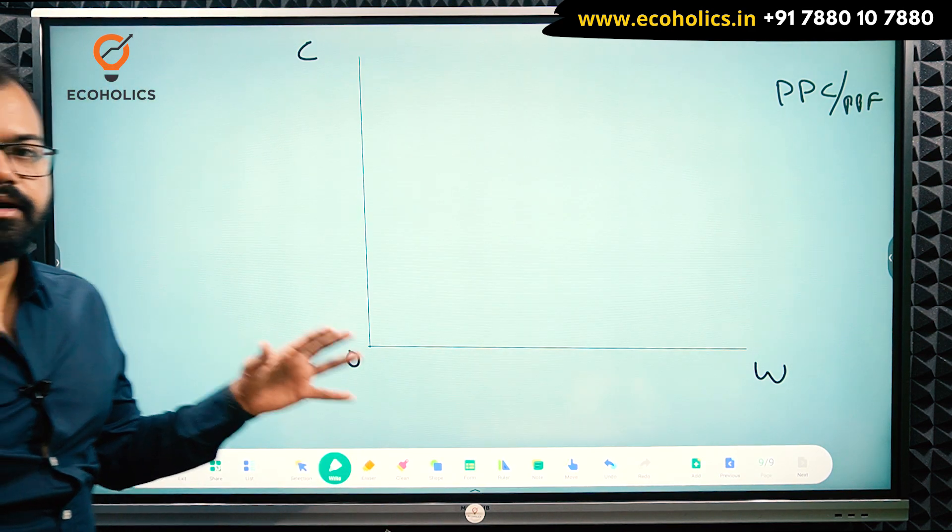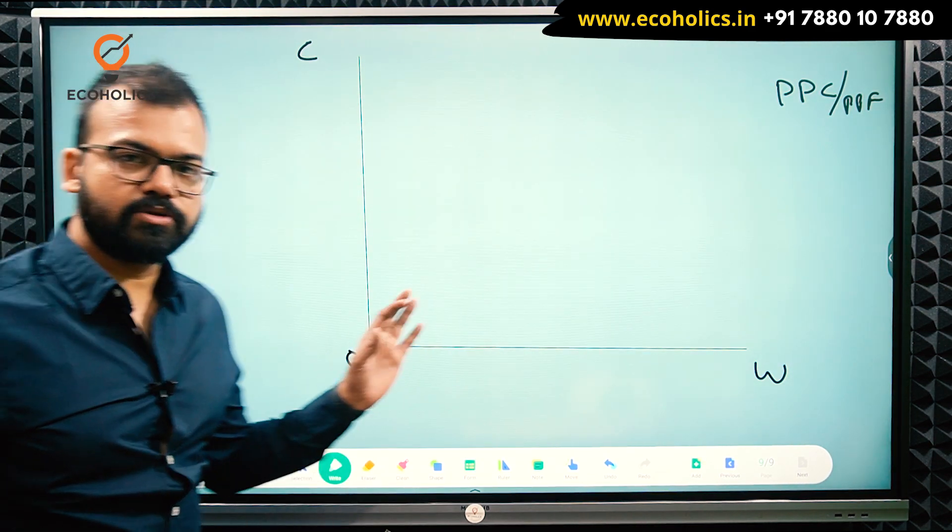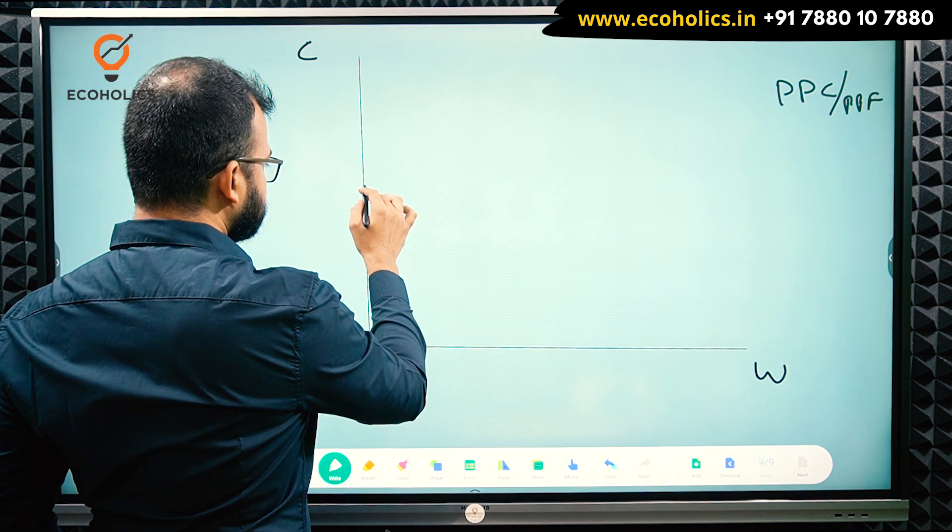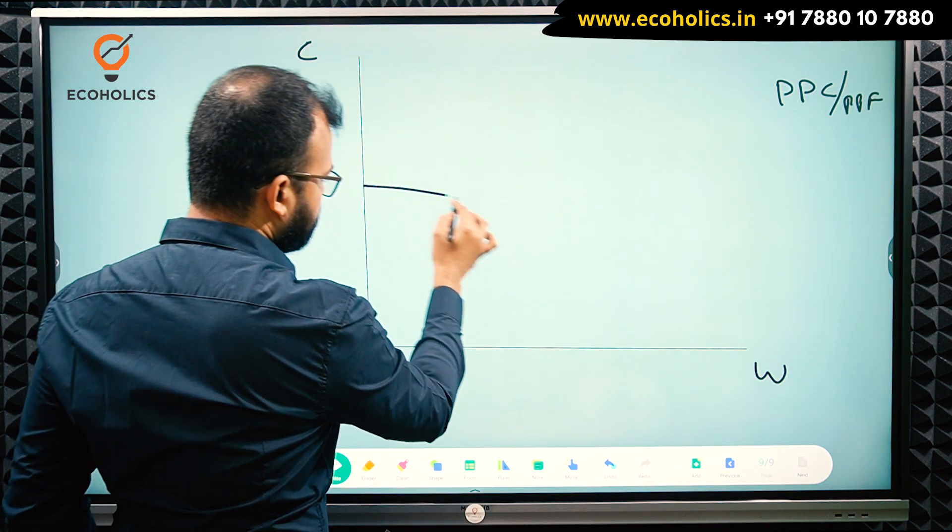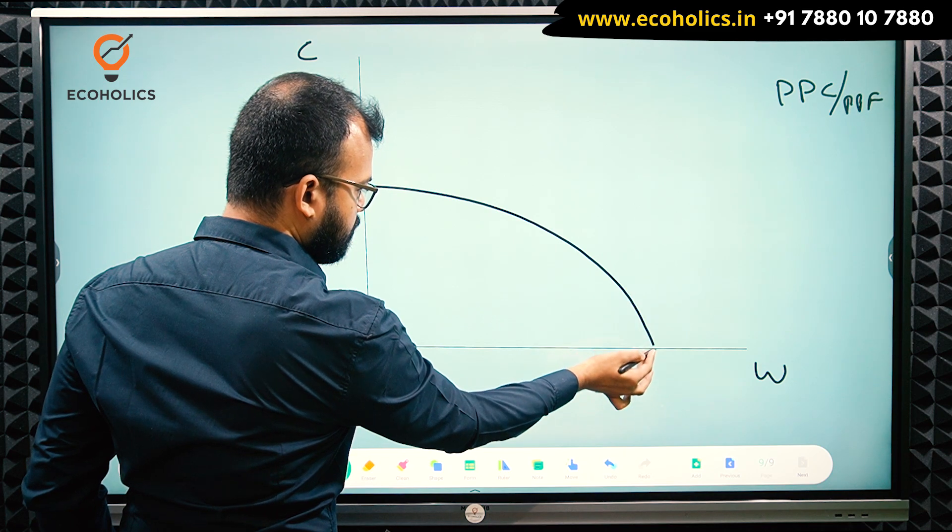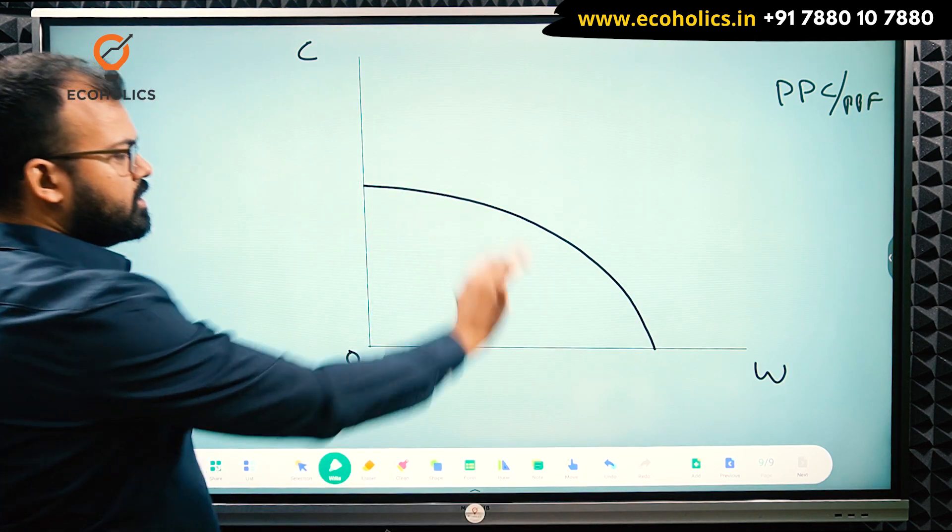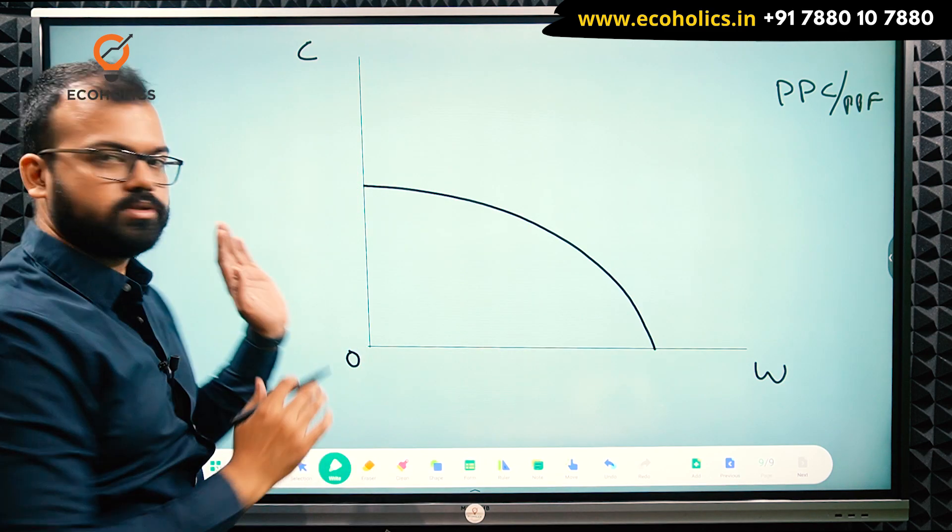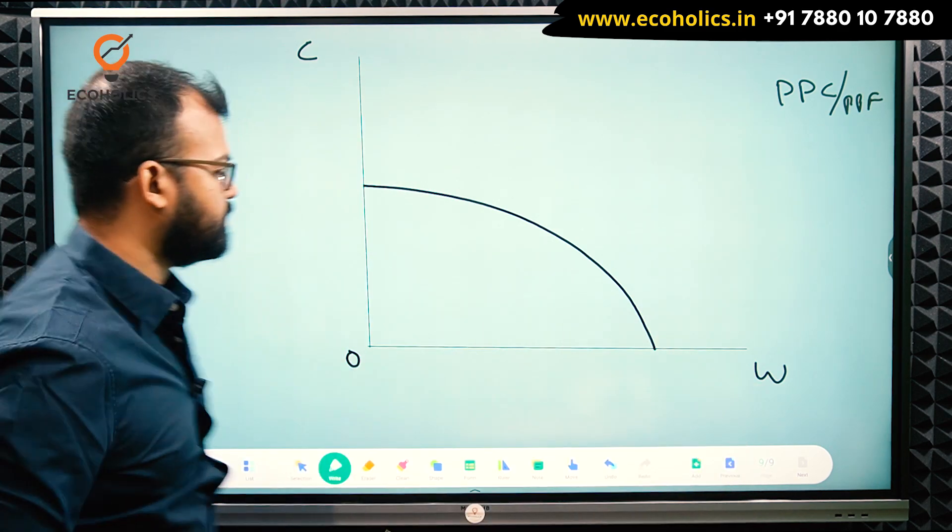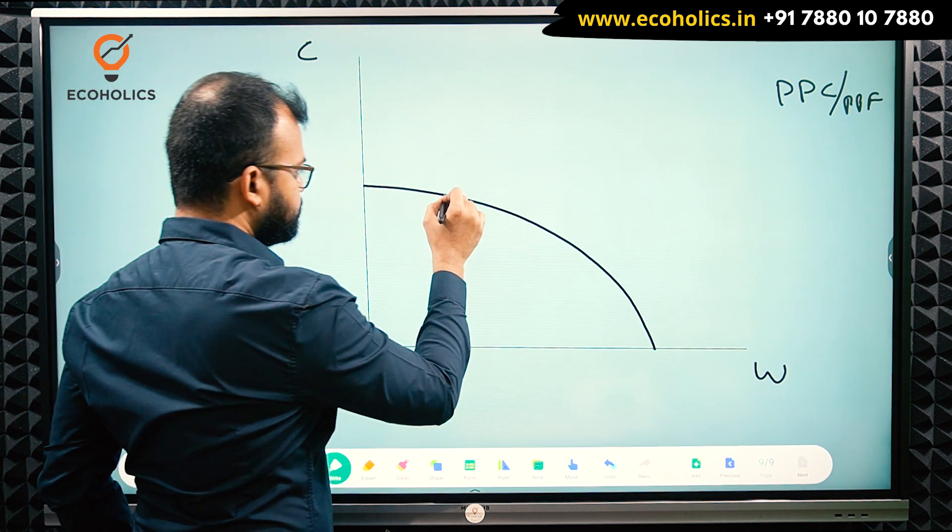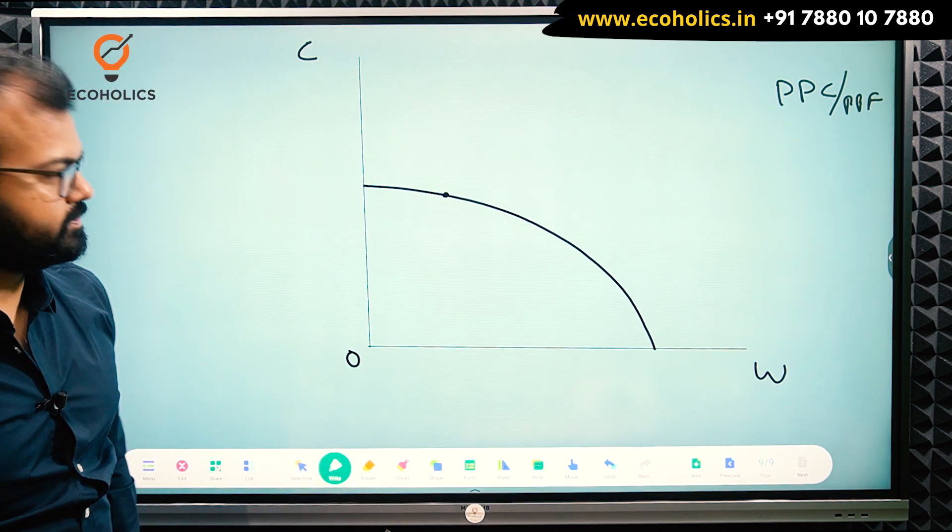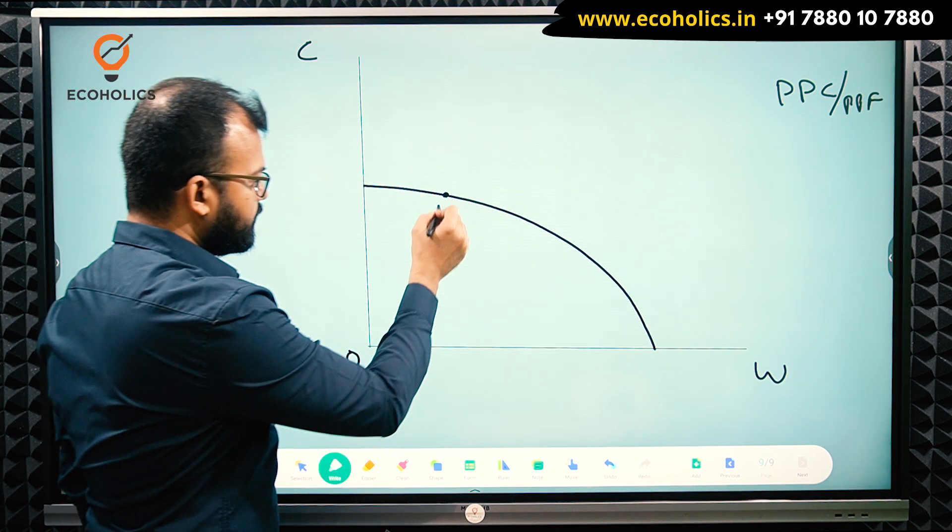As I told you earlier, India is having comparative advantage in terms of wheat production. So your PPC will look like this. This is the bulge. It means more of wheat, less of cloth. So India is expert in wheat. Now suppose this is the point where India is currently producing. I can say point number A.